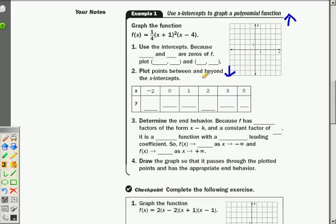The intercepts, because negative one and positive four are zeros, I can plot the point negative one, zero, and four, zero. So I'm going to go negative one, zero, and drop a dot there. One, two, three, four, and I'm going to drop a dot there.